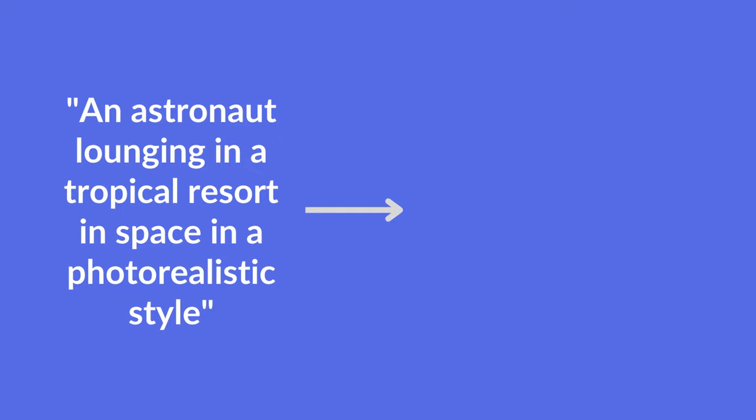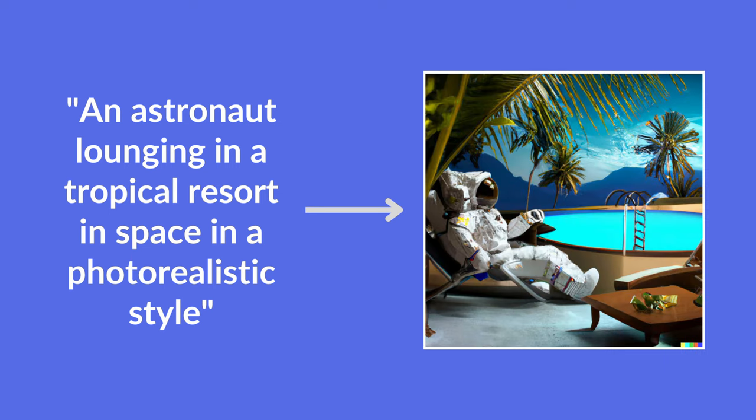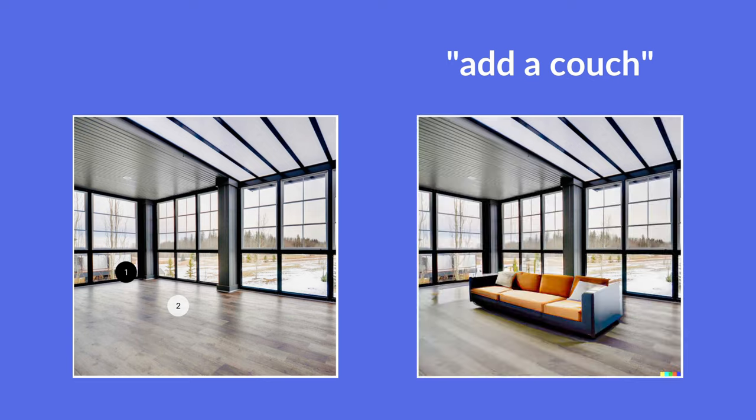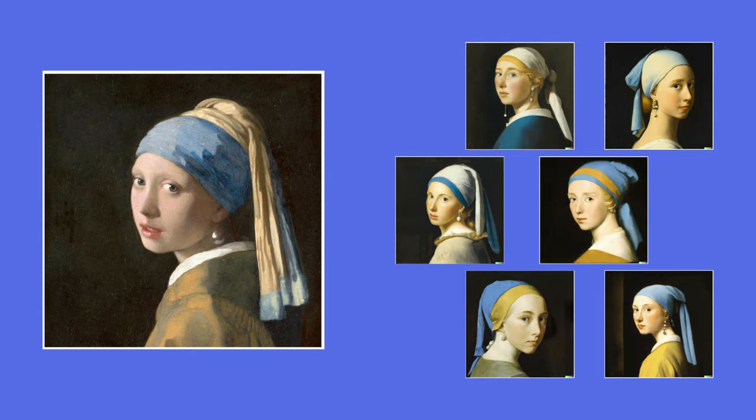So what can it do? DALL-E 2's main functionality is to create images given a certain text or caption. But on top of that, it can also edit images and add new information — for example, add a couch to an empty living room space. And on top of that, you can also create alternatives or variations to a given image.